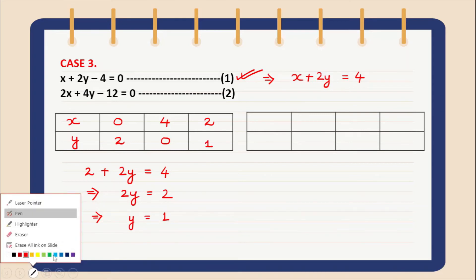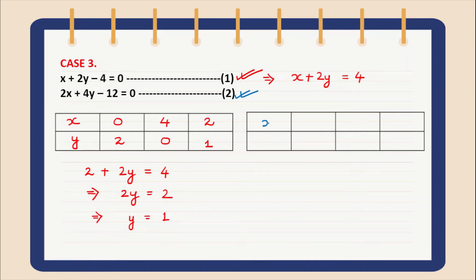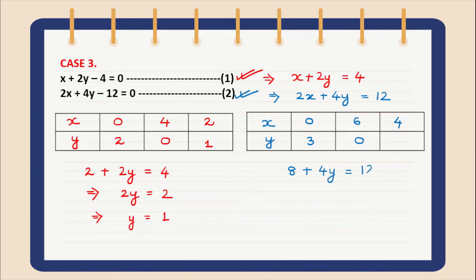Now let us find the solution table for the second equation. Simplifying gives 2x plus 4y equal to 12. For x equal to 0, the value of y will be 12 by 3, which is 3. For y equal to 0, the value of x will be 6. For x equal to 4, we get 8 plus 4y equal to 12, so 4y equals 4, which gives y equal to 1.